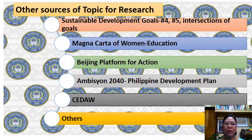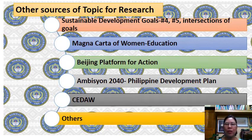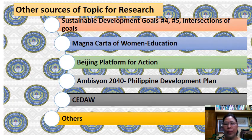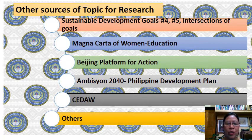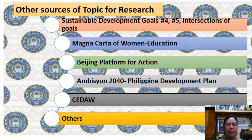Other sources of topics for research may be issues or problems coming from the Sustainable Development Goals. For example, goal number four on education, number five on gender equality and women empowerment, or maybe the intersections of the different groups. Issues in education of women and girls may be coming from the Magna Carta of Women, as well as the Beijing Platform for Action, Ambition 2040, CEDAW, and many others.